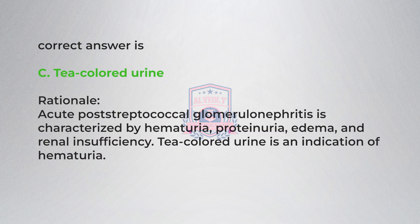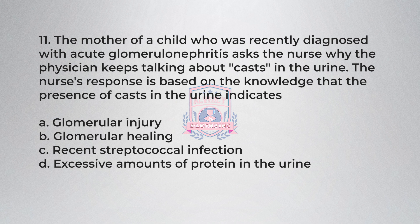Correct answer is C, tea-colored urine. Rationale: Acute post-streptococcal glomerulonephritis is characterized by hematuria, proteinuria, edema, and renal insufficiency. Tea-colored urine is an indication of hematuria.